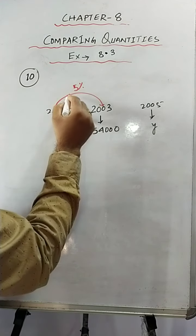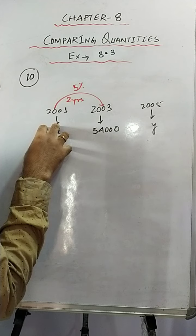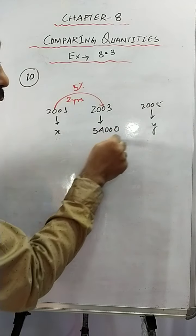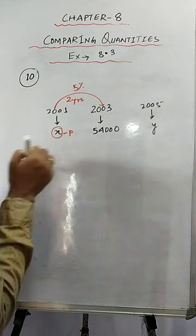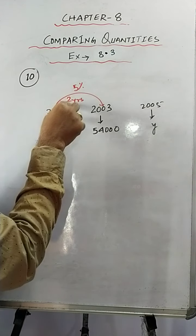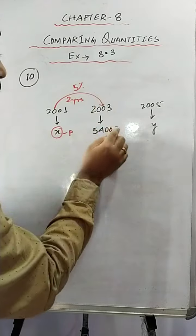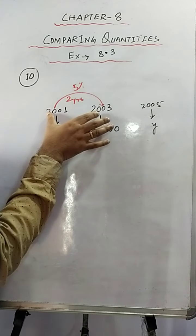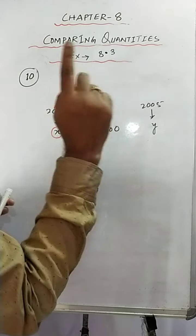What is the time span between 2001 and 2003? It is two years. So whatever population was there in 2001, within this span of two years at the rate of 5%, the population became 54,000. Now, if you consider the 2001 population as the principal, time is two years, and rate is 5%, then the amount after two years is given as 54,000.